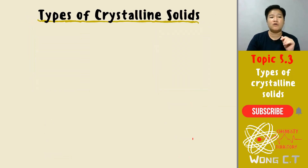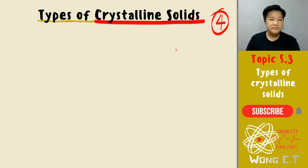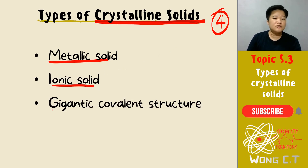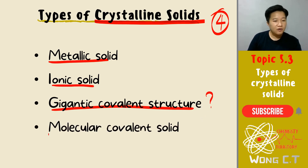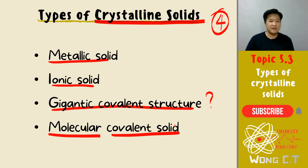Next we want to focus on crystalline solid only. There are four different types of crystalline solid: the first is metallic solid, the second is ionic solid, the third is gigantic covalent structure, and last but not least, molecular covalent solid.